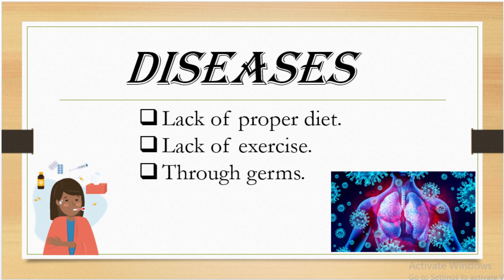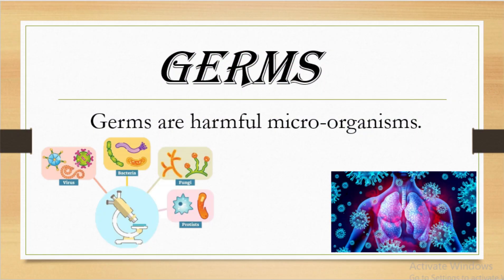Now we use the term germs. Do you know what we mean by germs? Please write your answer in the comment section. Germs are harmful microorganisms. What do we mean by microorganisms? Look at the word — micro means small or tiny, and organisms means living things. So microorganisms are small living organisms. Germs are harmful microorganisms, which means there must be good microorganisms also — and yes, there are many microorganisms that are beneficial for us, which we will discuss in another video.